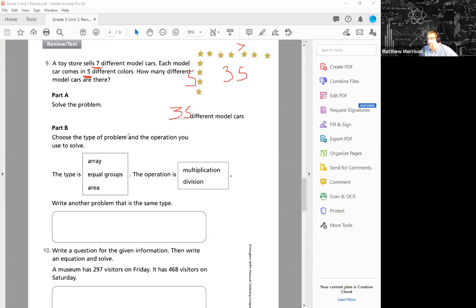So here we have solved the problem. We know that there are 35 different model cars. Now we have to choose a type of problem that we would use. So this type is an array. And we know that this operation is multiplication because we don't know the total number of groups. We only know that there are seven groups of five - seven different models of cars and five different colors.